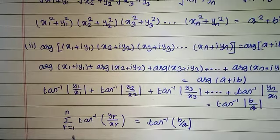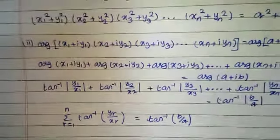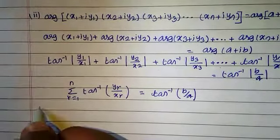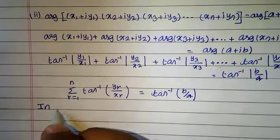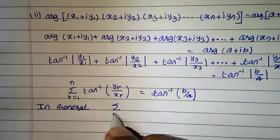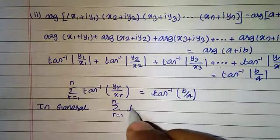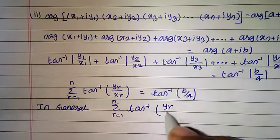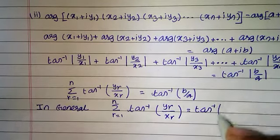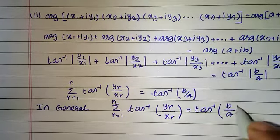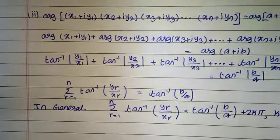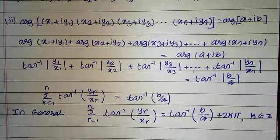Using summation notation, and since the above is the principal value, in general we include multiples of 2π. So summation r equals 1 to n of tan inverse of yr by xr equals tan inverse of b by a plus 2kπ, where k belongs to integers. So that is the second proof.